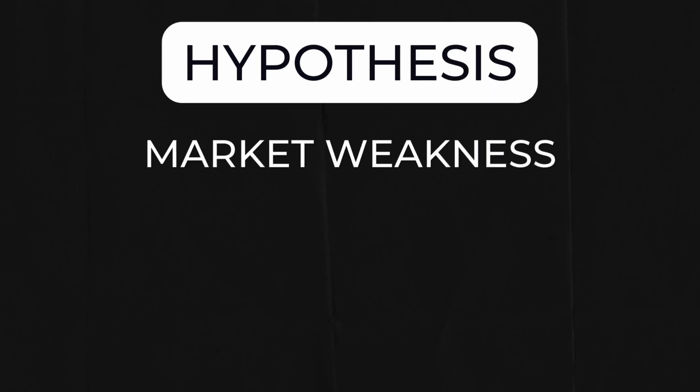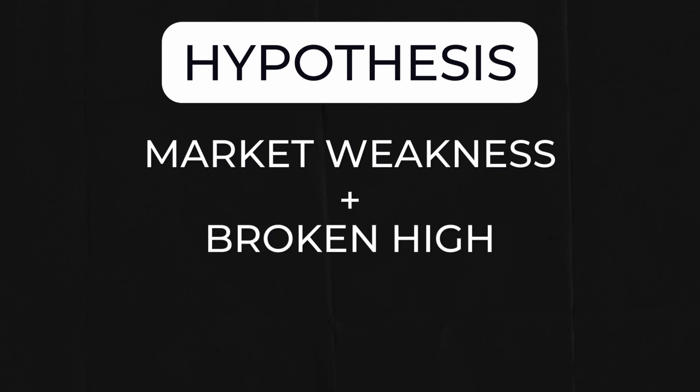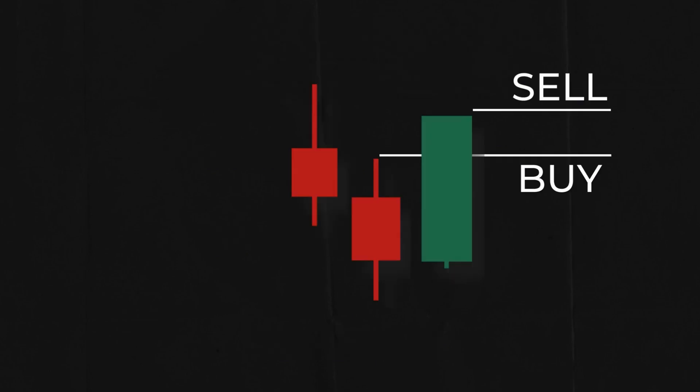If the market shows weakness with a candle that has a lower low and lower high, but then that high is broken the next day, that is a signal of a reversal. I then hold that trade for the rest of the day and exit at the close.